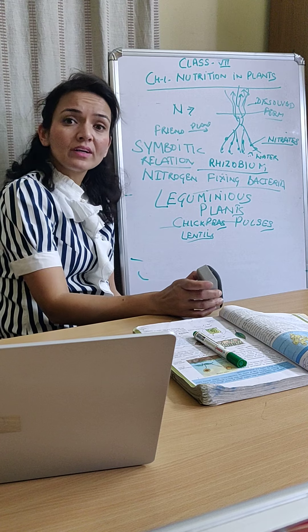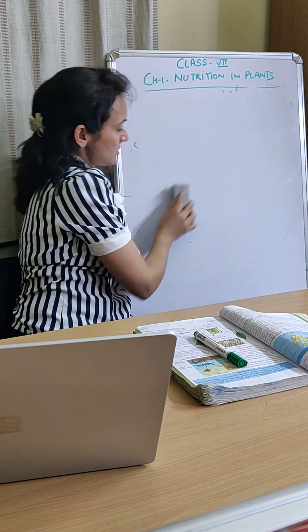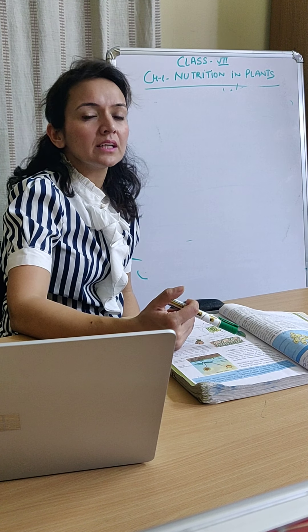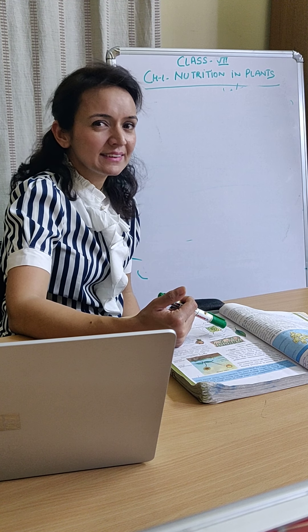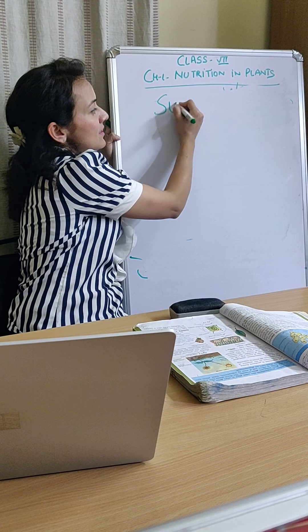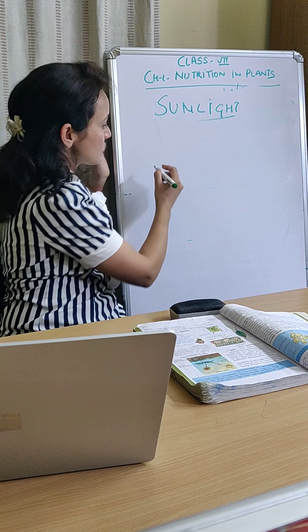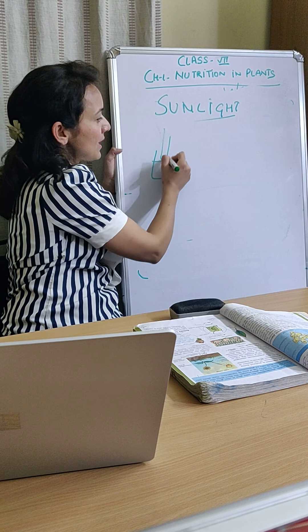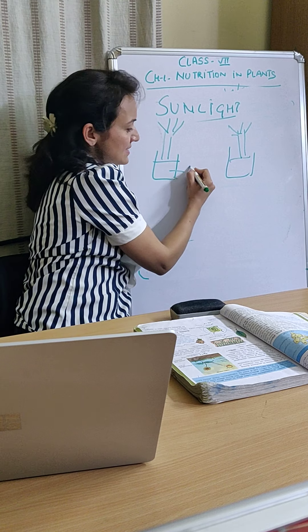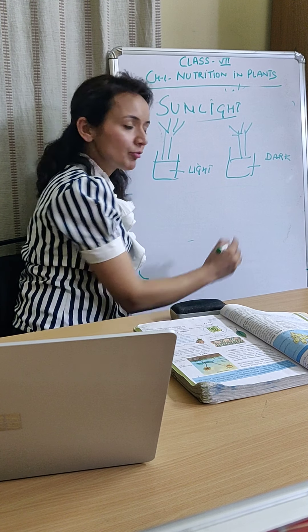Now, how can you show that sunlight is important for photosynthesis? I will conduct an experiment using two plants. I have two plants: this plant was kept in light, and this plant was kept in the dark without sunlight for 4 to 5 days. Even though both still appear green in color, we will conduct a test to prove sunlight is required.